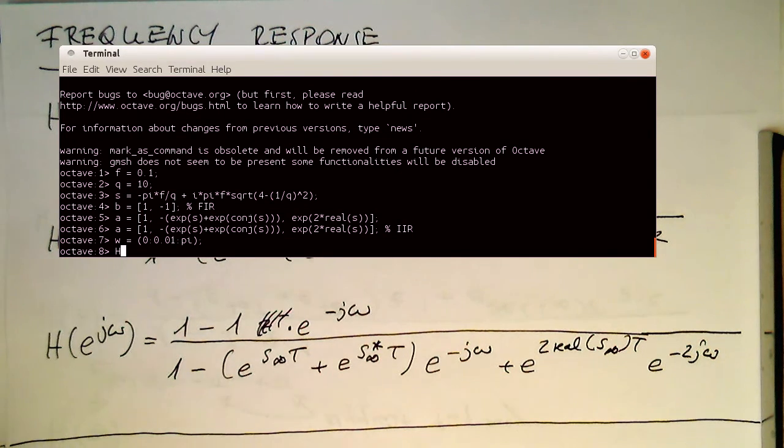And so now what we just need to do is just create our transfer function. So first the 1 here. That's our B of 1 coefficient here. And so this has no exponential. And then we add our B of 2 coefficient. That's our minus 1 here. And we multiply this with exp of minus j omega. And with that we've got our numerator sorted.